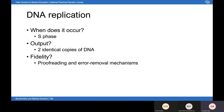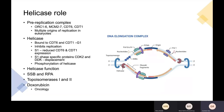Let's start with helicase. In terms of its role, we must first consider the pre-replication complex, which consists of ORC1-6, MCM2-7, CDT6, and CDT1, assembling at the origins of replication during the G1 phase. There are multiple origins in humans, whereas prokaryotes have a single origin. Replication always begins at the origins of replication, regardless of whether it's in prokaryotes or eukaryotes.